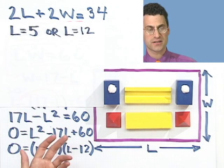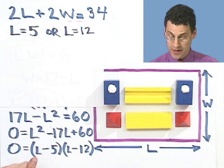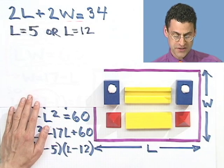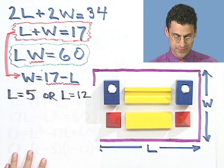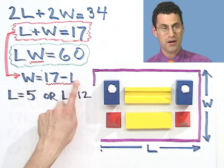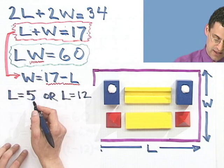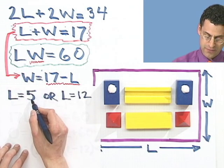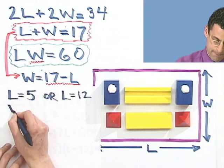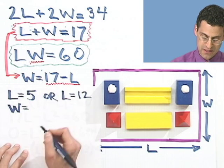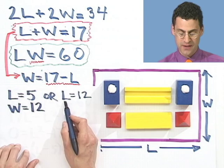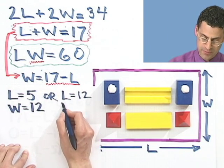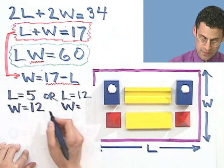Well, first of all, what would the W be? Well, remember what W is. I'm going to slide this down a little bit. W is 17 minus L. So if L equals 5, then what would W be? Well, it would be 17 minus 5, which is 12. On the other hand, if L equals 12, what would W be? Well, W would be 5.